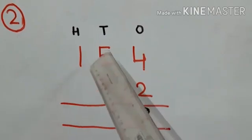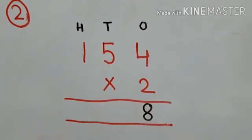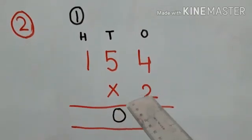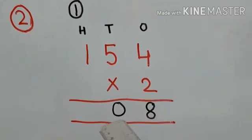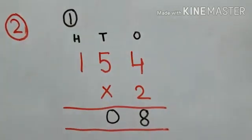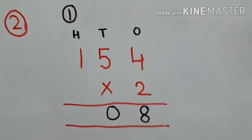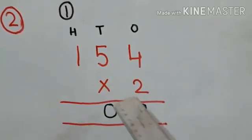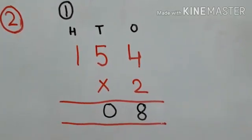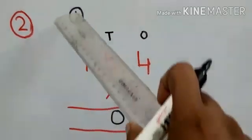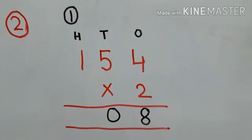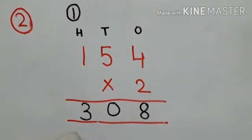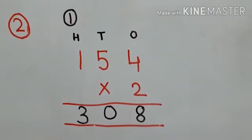Five twos are 10. From 10, we write zero down and 1 is carried to the hundreds place. Then we multiply 2 with the hundreds-digit number which is 1 — two ones are 2, plus 1 carried, gives 3. So when we multiply 154 with 2, our answer is 308.